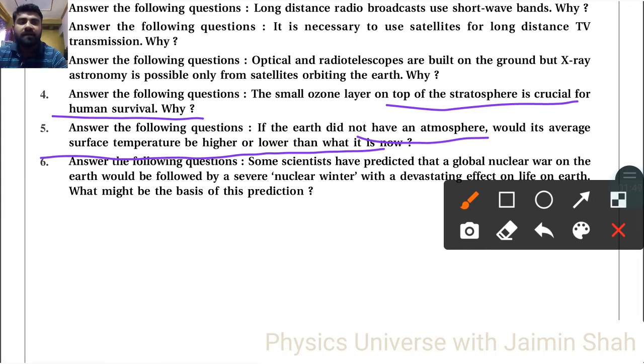If it is not there, our temperature would be very low. The whole earth would become ice. Some scientists have predicted that a global nuclear war on the earth would be followed by a severe nuclear winter with a devastating effect on life on earth. What might be the basis of this prediction?